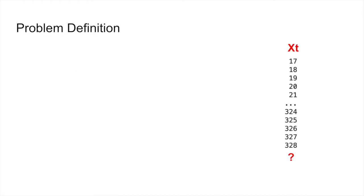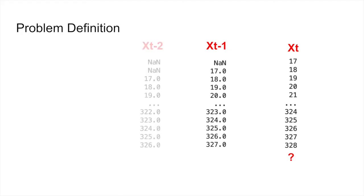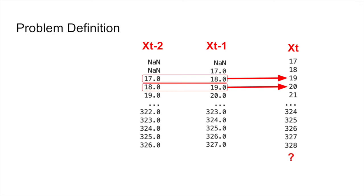It's a simple time series — 17, 18, all the way down to 328 — and the problem is to look at these numbers and just predict the next value, so just one number at the end, not two or three. The way we want to solve this is to shift the whole time series multiple times. For example, 17 and 18 can be predictors for 19, and 18 and 19 are predictors for 20, and so on. All the columns on the left — the shifts — are going to be inputs to predict the labels on the right.